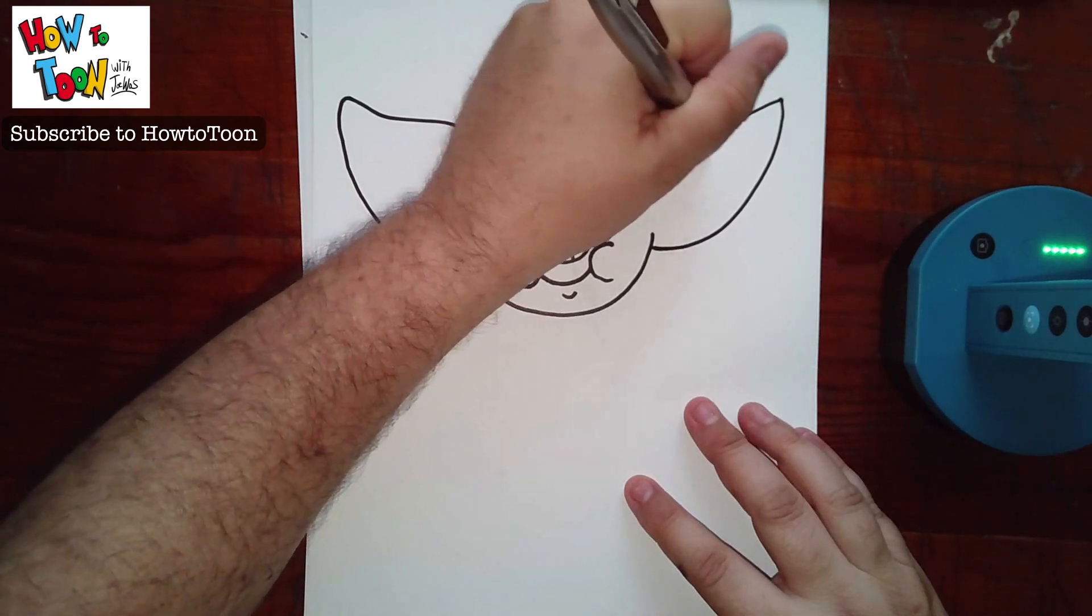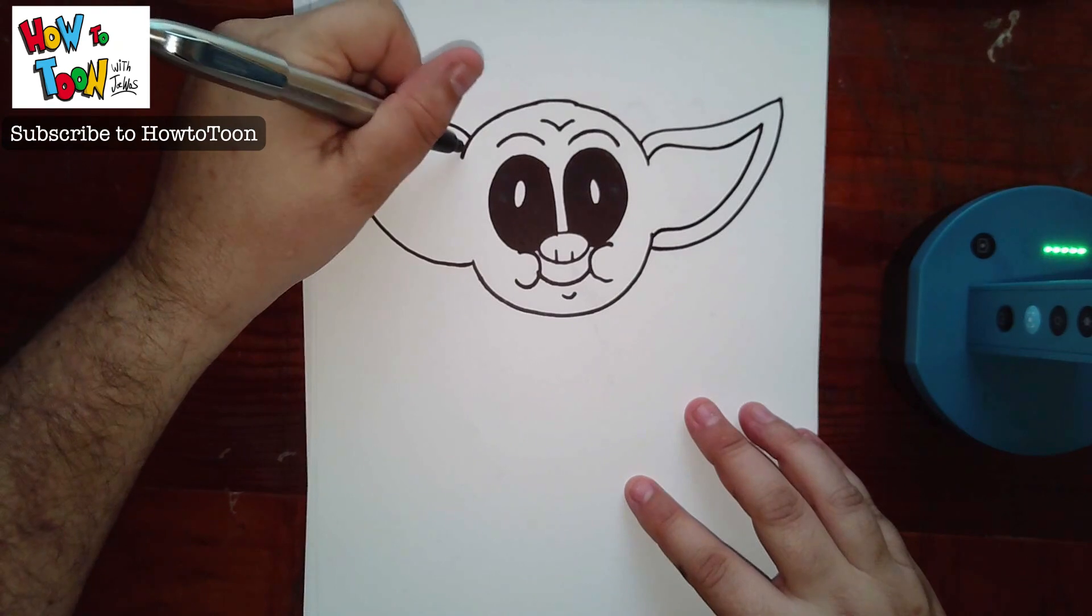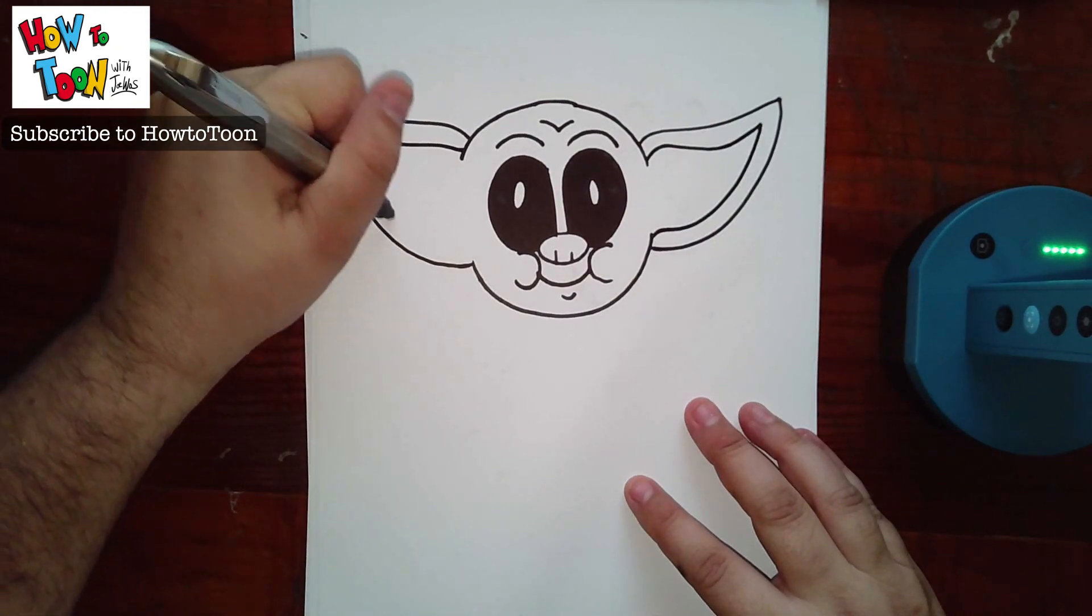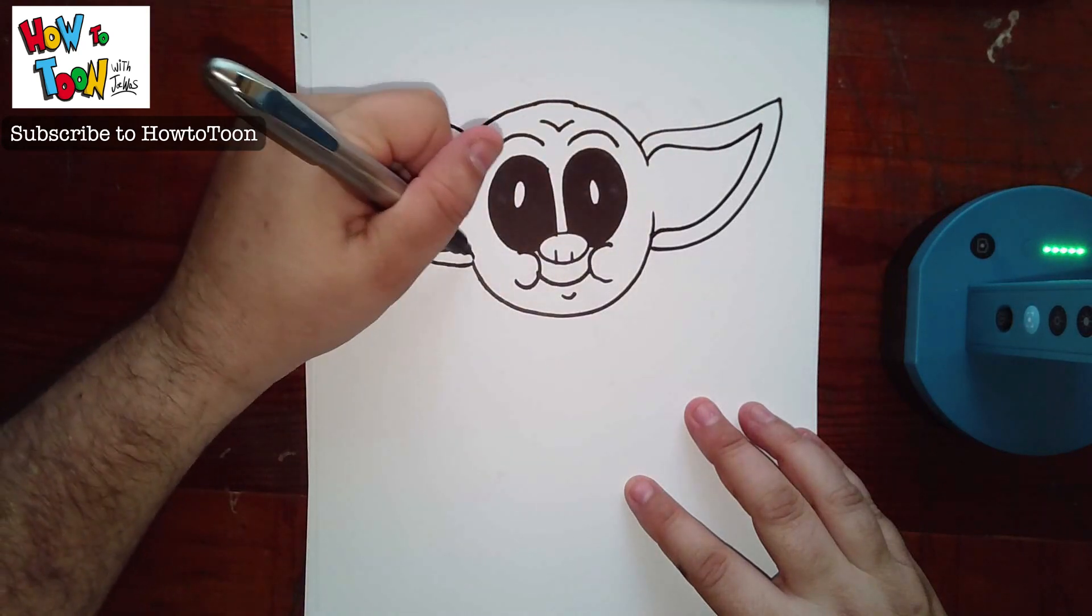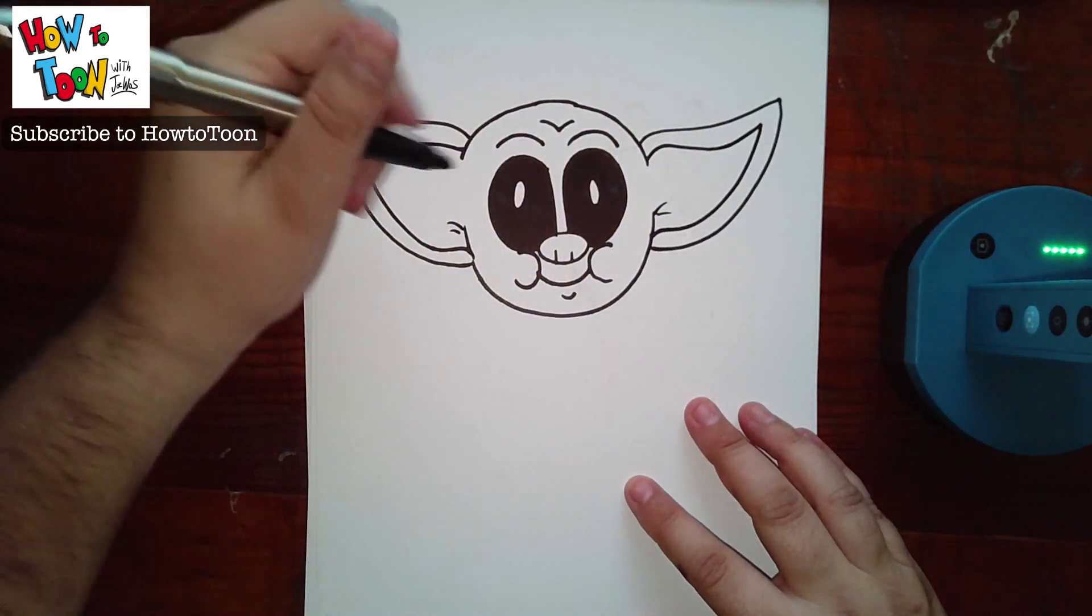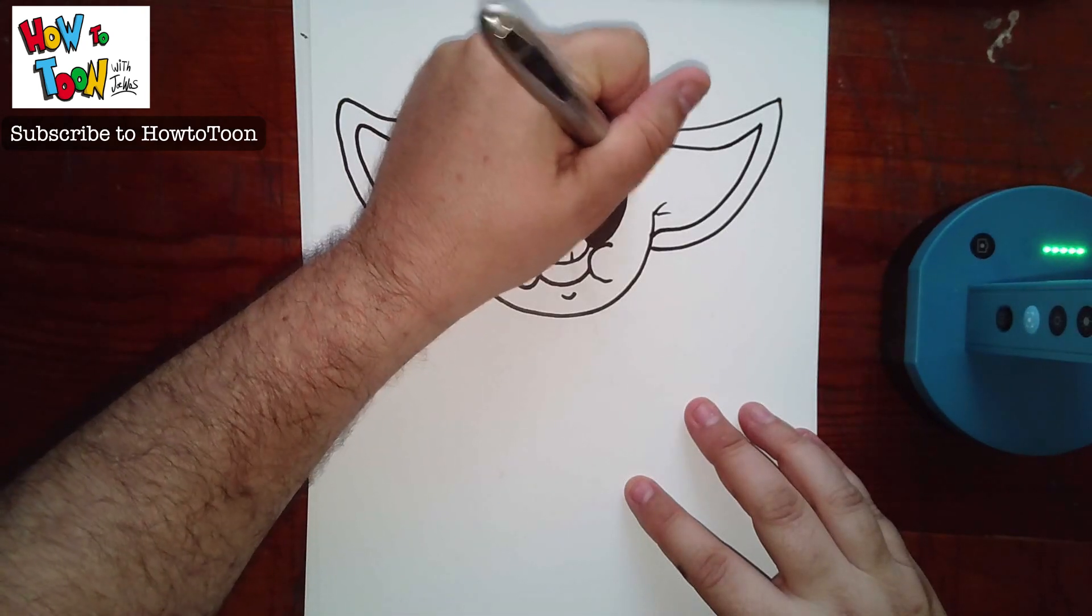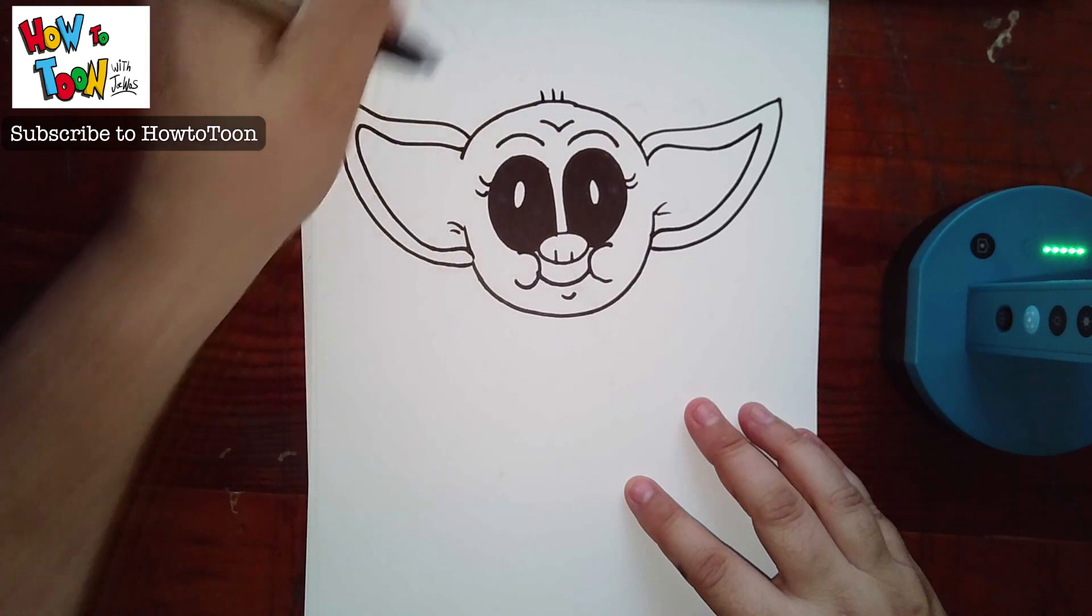And then I come around a little bit at the end. Lines up. And then maybe a couple little hairs there. Some eyelashes. Maybe a couple little hairs on the top of the head too.